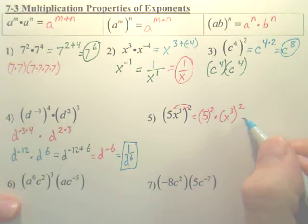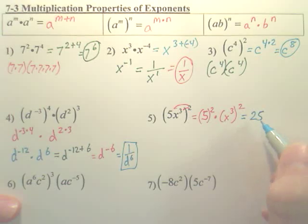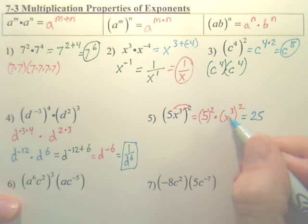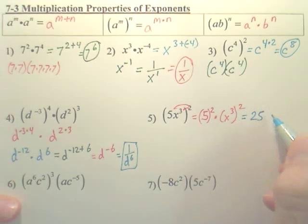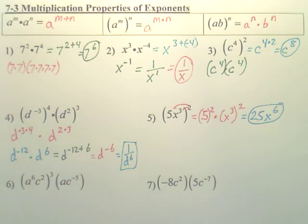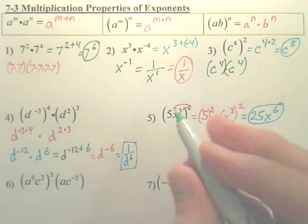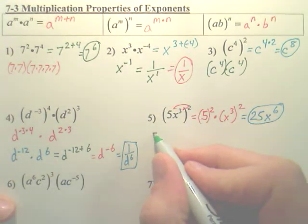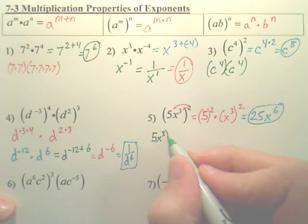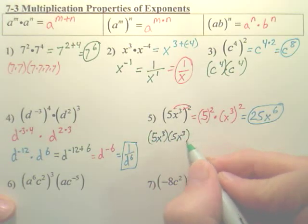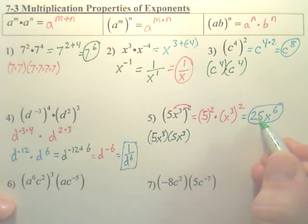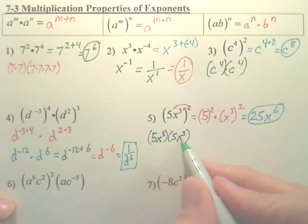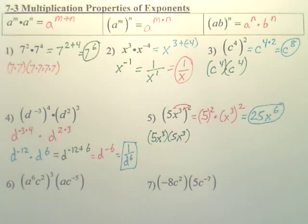Five squared is twenty-five. And x to the third squared — multiply three times two — is x to the sixth. So the answer is twenty-five x to the sixth. Technically, five x to the third squared means five x to the third times itself: five times five is twenty-five, and x to the third times x to the third is x to the sixth.